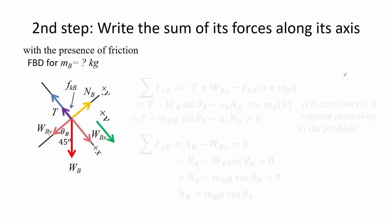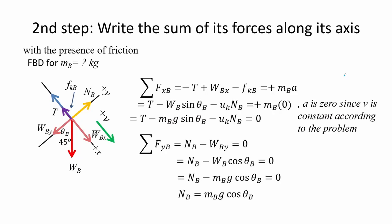Also for mass B, rewriting the sum of forces in order to incorporate the presence of the friction, the sum of forces along X is the only altered, and so it becomes the sum of the tension minus mass B times G times sine of theta B minus the coefficient of kinetic friction times the normal force B equals to 0.